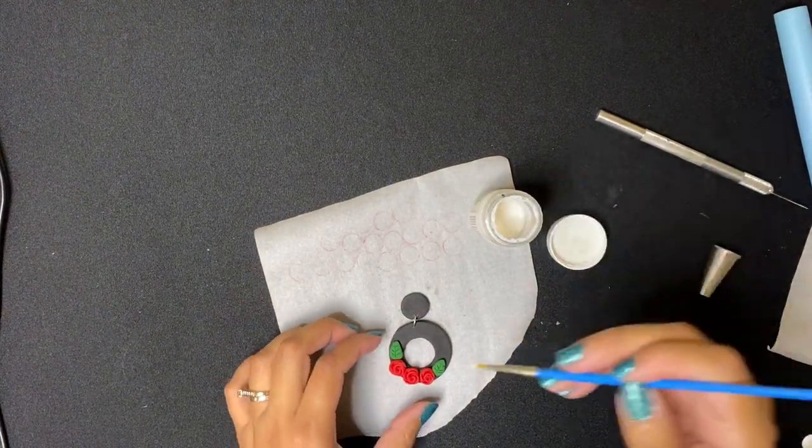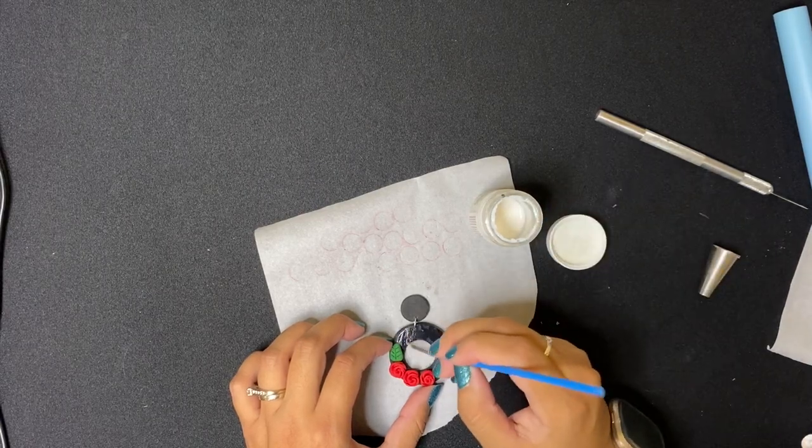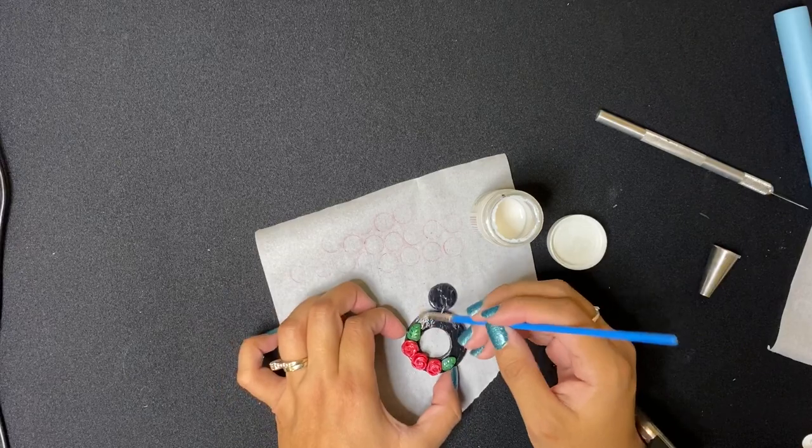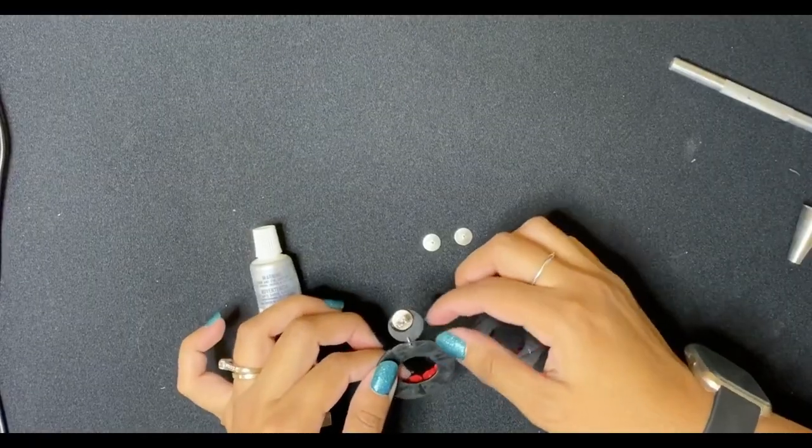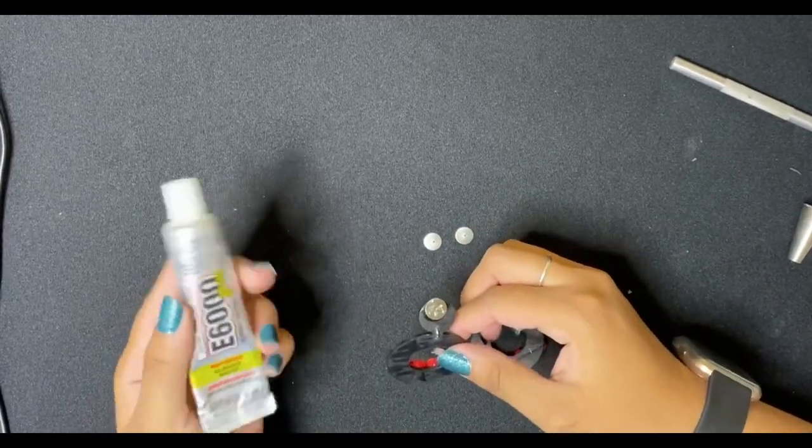If you want to make it look extra shiny, if you have some glaze, now would be the time that you would gently paint some of that clay glaze over it. You'll let it air dry for about 30 minutes. Finally, you'll use super glue to attach your earring backs to the back of your earring.